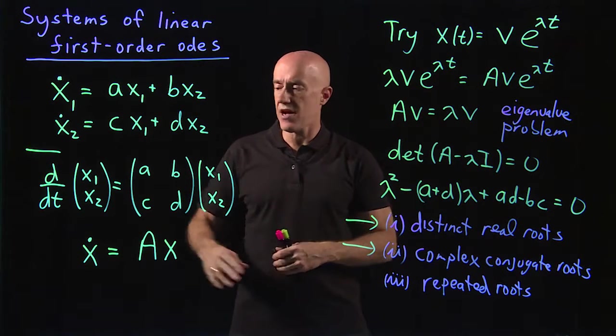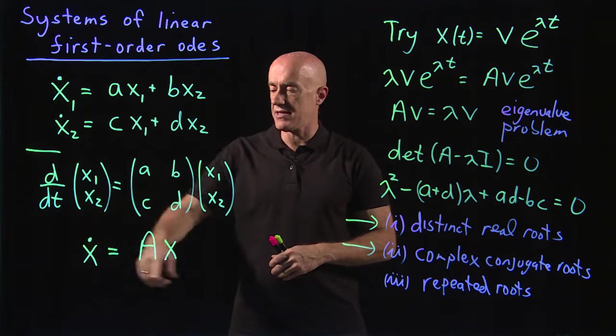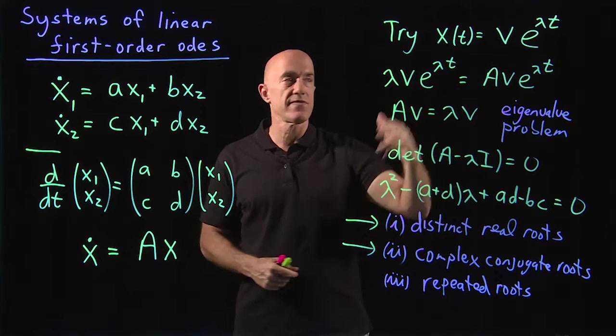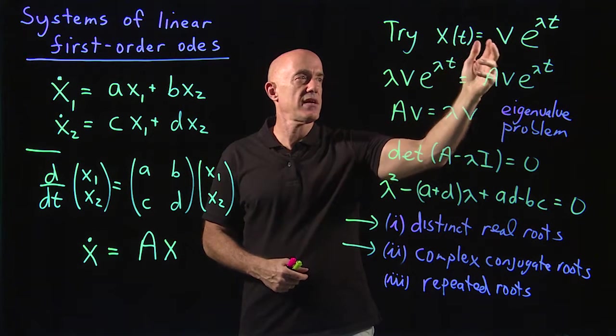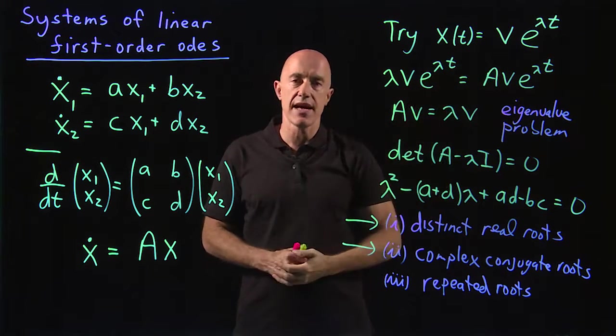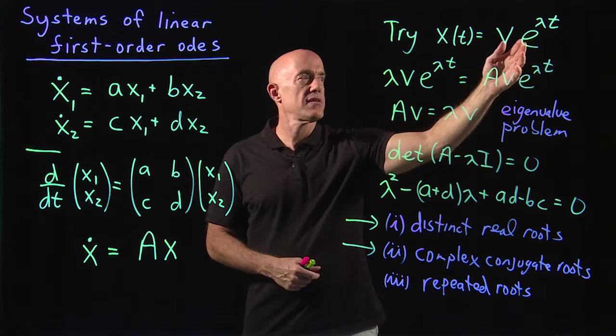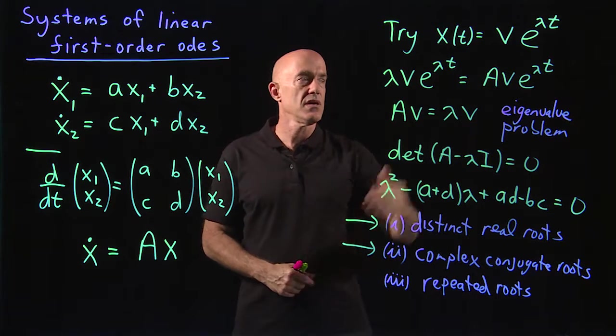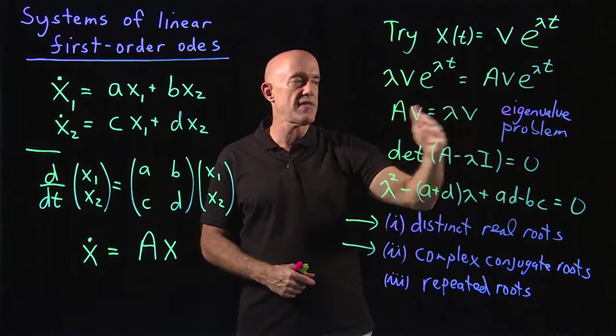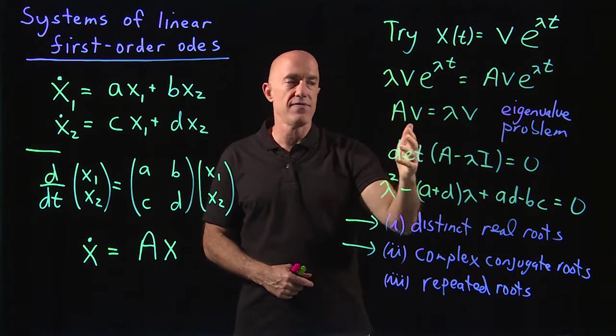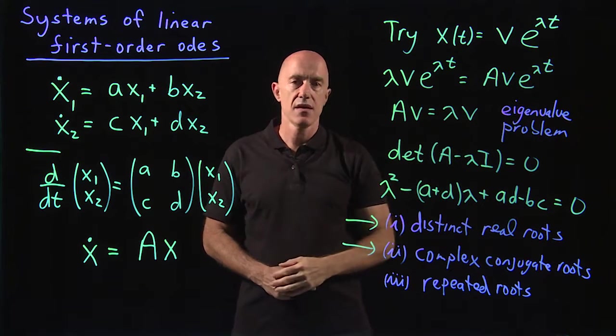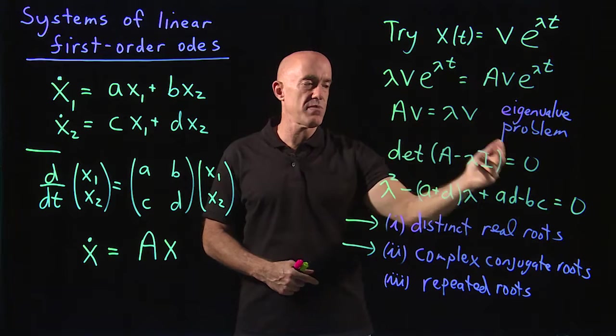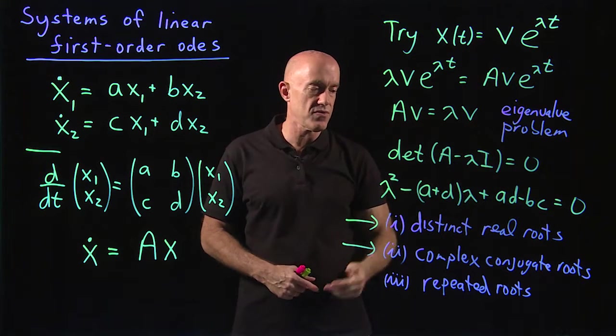I'm going to show you how to solve this by the method of ansatz. We're going to try to find a solution for x of t equal to v, which turns out to be the eigenvector, times e to the lambda t, and lambda will be the eigenvalue. So upon substitution, you get the eigenvalue problem: Av equals lambda v.